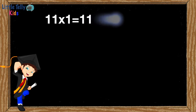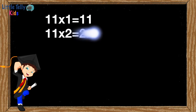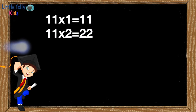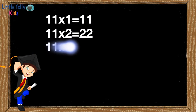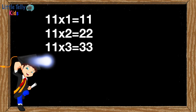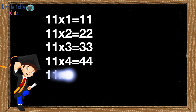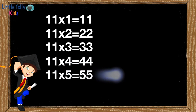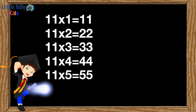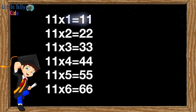Eleven ones are eleven. Eleven twos are twenty-two. Eleven threes are thirty-three. Eleven fours are forty-four. Eleven fives are fifty-five. Eleven sixes are sixty-six.